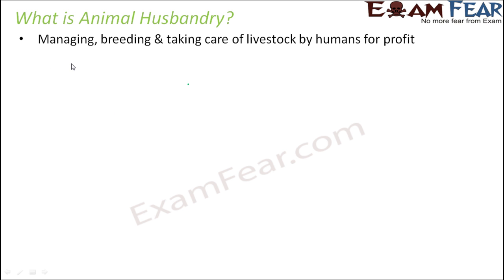Now there are so many different terms here. What do we mean by livestock? Livestock refers to domesticated animals — those living organisms which can be domesticated. Why is all this done for profit? Because human beings get food from these domesticated animals, either in the form of milk, eggs, or meat — in some form they get their food.